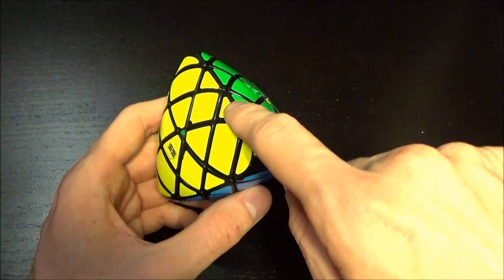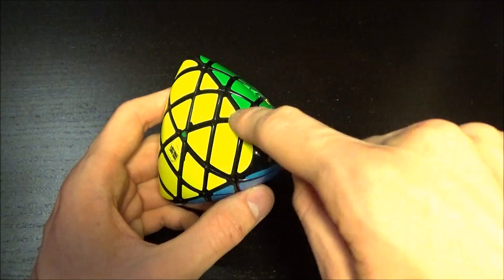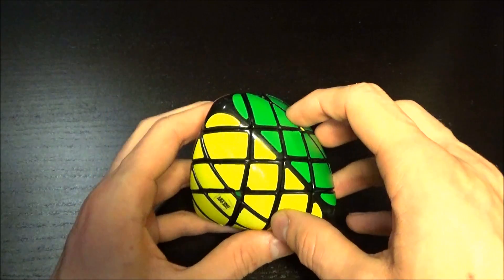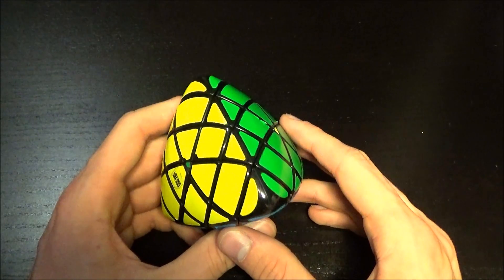And all the sides here have to be the same color. So this is all yellow here. This is all green. This is blue. Opposite is all red. Okay, now let's start.